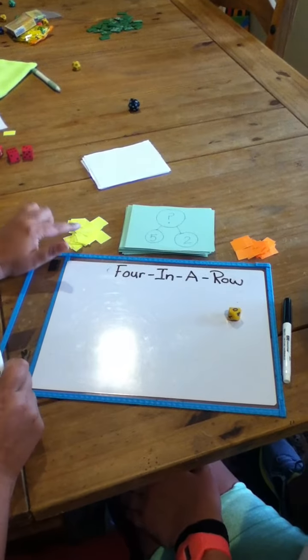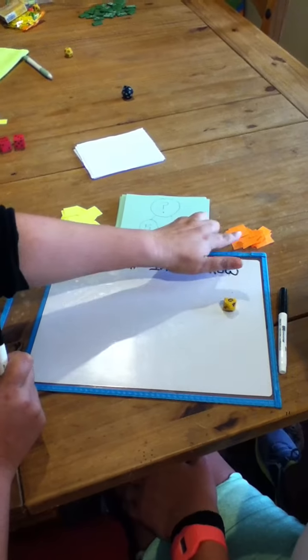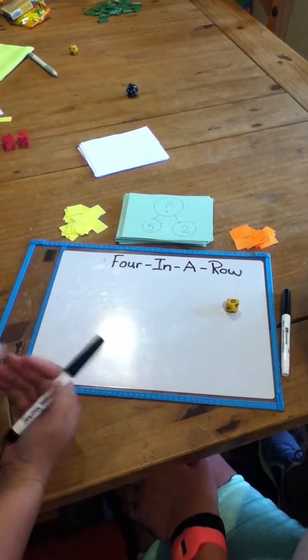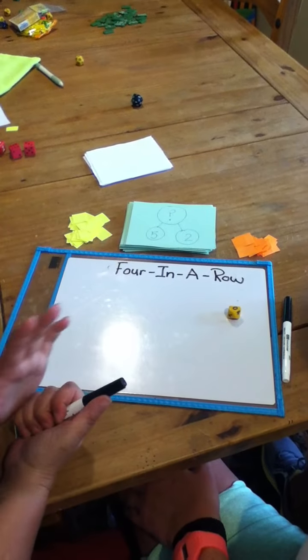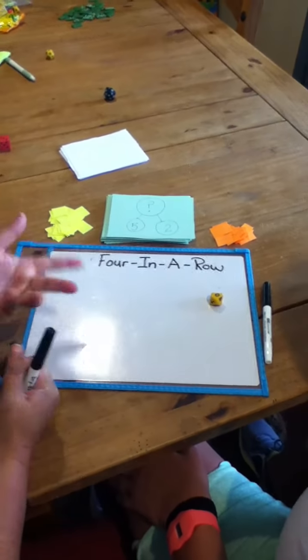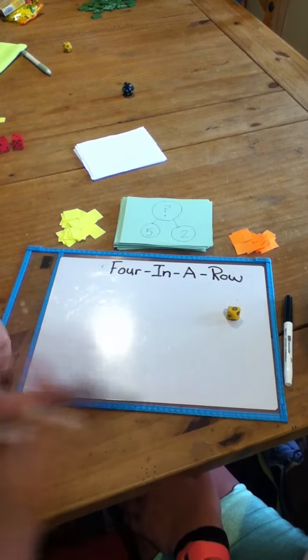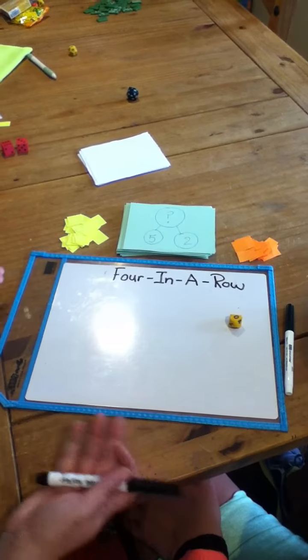We can use slips of paper. That way you can know player one is yellow, player two is orange. You can also use coins. I could be pennies, Ashley could be nickels, whatever is around the house that's easy to do. We could play with all pennies. I could be heads, you could be tails. So whatever you have available.